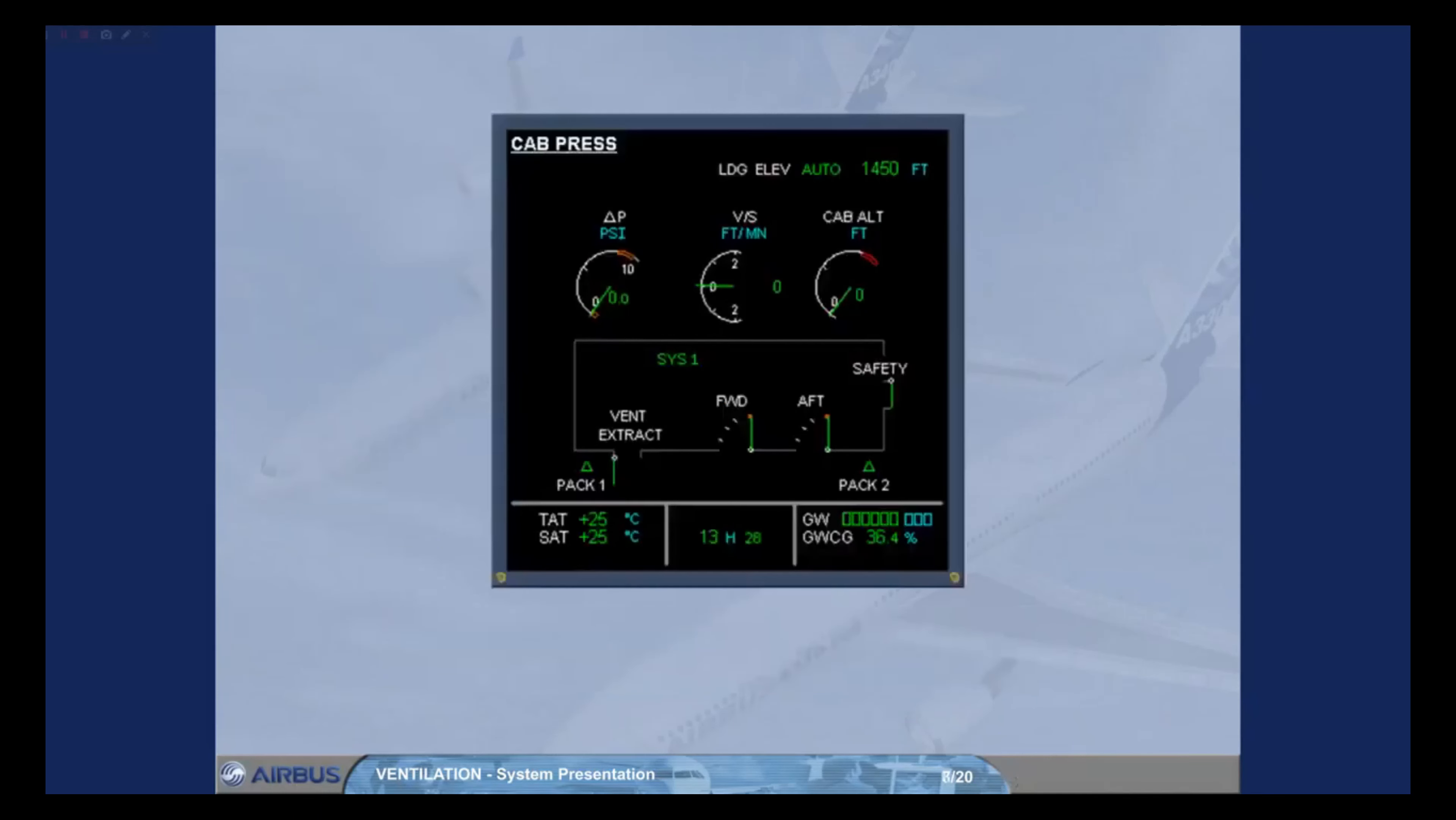A section of the ECAM cabin press page displays avionics ventilation system information. The vent and extract indications provide information on the state of the avionics ventilation systems. Normally they remain white.